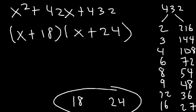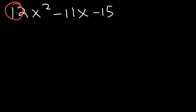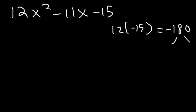So that's what you can do whenever the leading coefficient is 1. But what about if it's not 1? What should we do in that case? Like this particular example: 12x squared minus 11x minus 15. How can we factor this expression? The first thing we need to do is multiply 12 by negative 15. 12 times negative 15 is equal to negative 180. So what two numbers multiply to negative 180 but add to negative 11?